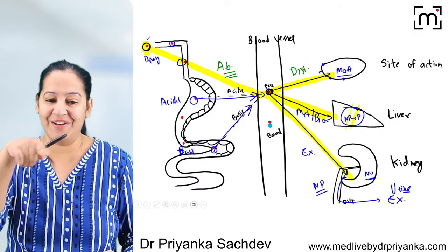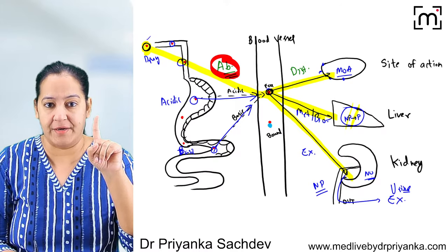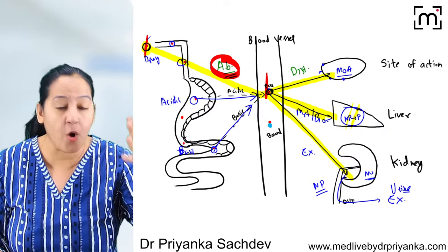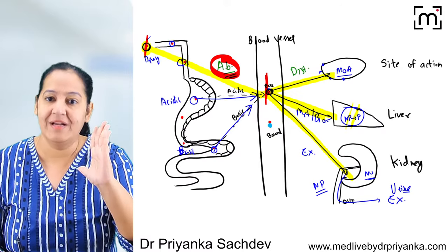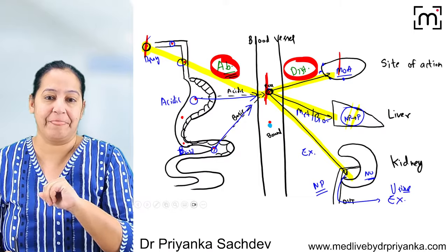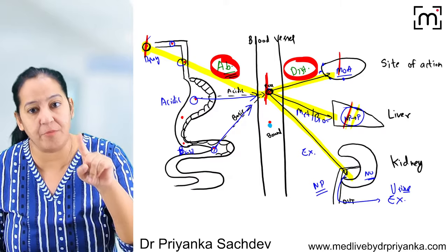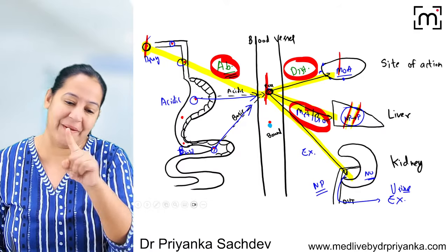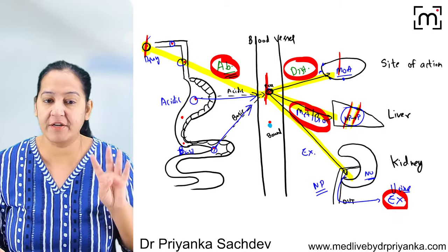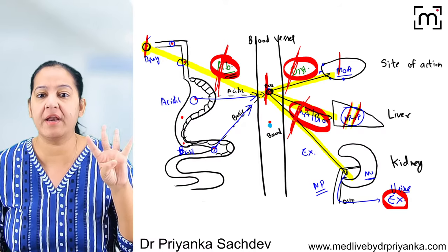So the four parts of pharmacokinetics are: first, absorption — movement of drug from site of administration to circulation; second, distribution — movement from circulation to site of action; third, metabolism or biotransformation — conversion of drug from non-polar to polar; and finally, excretion — excreting the drug out of the body via the kidney. These are the four things the body does to the drug.